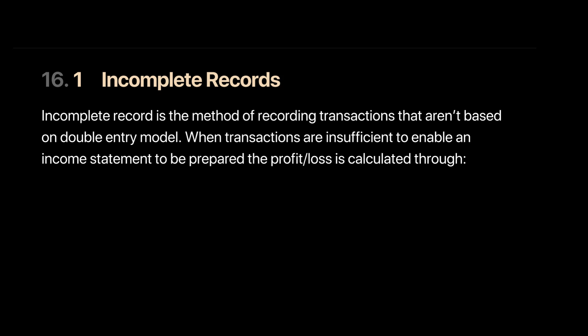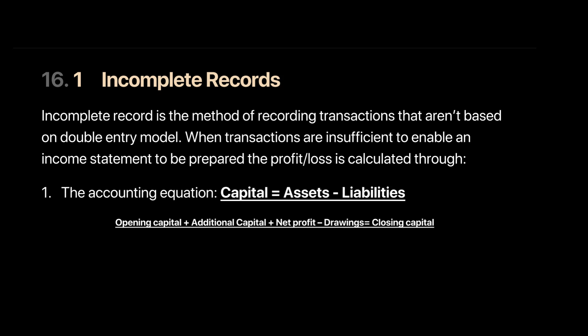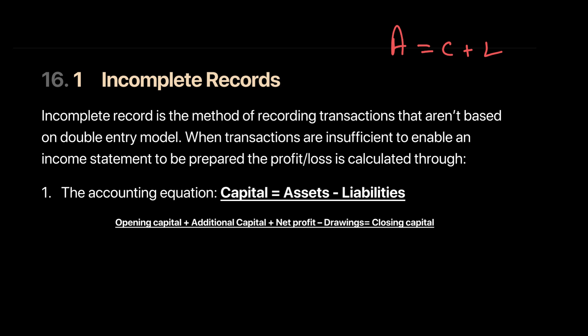The basic logic should stem from the accounting equation. Remember: capital can be calculated as assets minus liabilities. The basic accounting equation is assets equal capital plus liabilities. The firm can give you information about the list of assets and the list of liabilities, and we will use that to calculate our capital, which is assets minus liabilities.